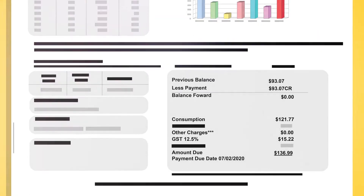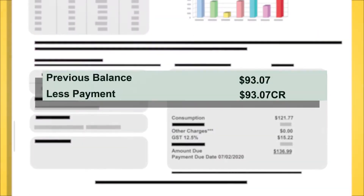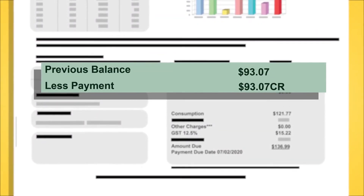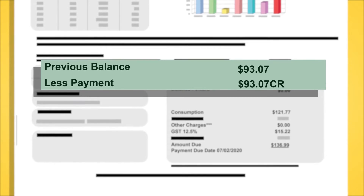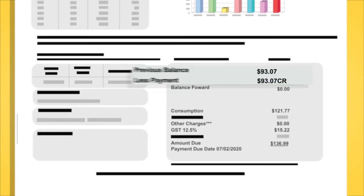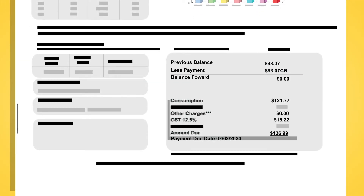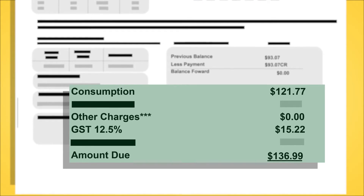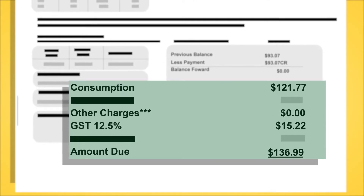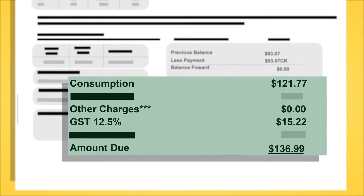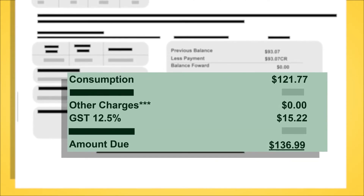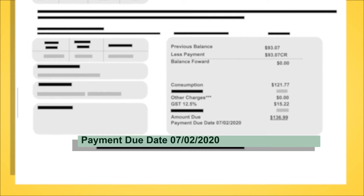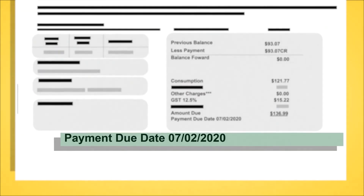On the right side, you will see your previous balance and payments made within the last billing period. Directly below shows the consumption cost with GST and other charges calculated to give you the total amount due. You will also find the due date for your bill.